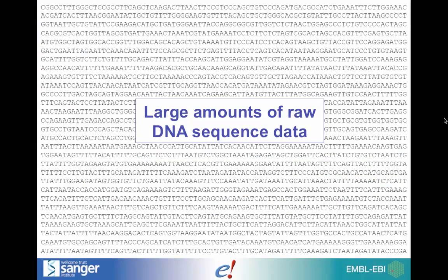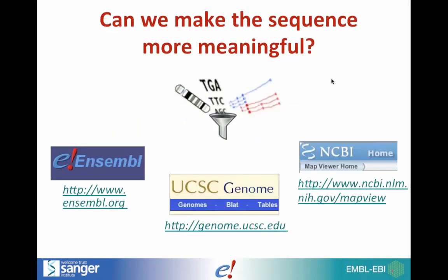We've got large amounts of raw DNA sequence data, so how can we make this sequence interesting or meaningful? This is what genome browsers are trying to do, like Ensembl, and also our competitor and collaborator, UCSC Genome Browser. A lot of people use both of these to look at multi-sequence browsing across different species — mainly vertebrates in Ensembl. There's also NCBI Map Viewer.